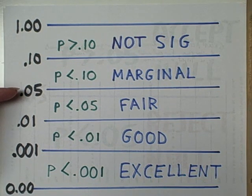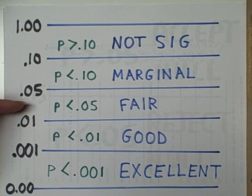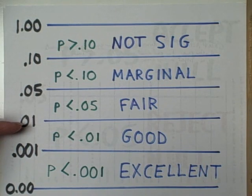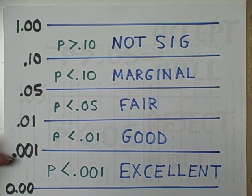Once we get below 0.05, we have a fair statistical significance. If we get below 0.01, one chance in 100, we've got good statistical significance. And when we get below the 0.001 level, we have excellent statistical significance.